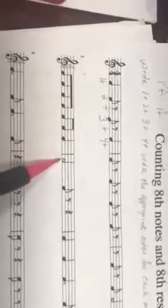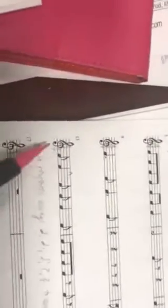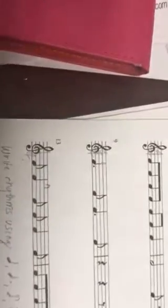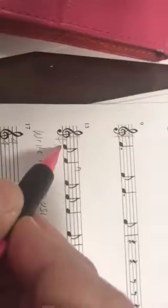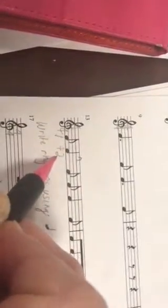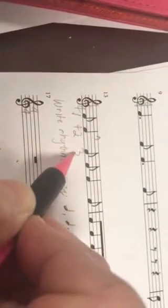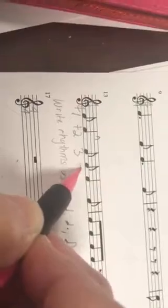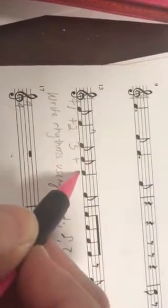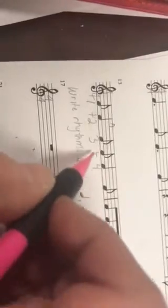For instance here you would write one and two and, just so we can see where the beats are. A little further down the page we have a kind of tricky rhythm. This is our syncopated rhythm, so I'm going to show you how that one works. We're going to write one here, we have and two.